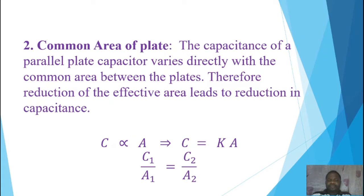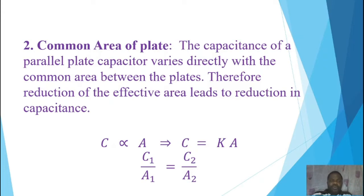Second factor: the common area of the plates. The capacitance of a parallel plate capacitor varies directly with the common area between the plates. Reducing the effective area leads to reduction in capacitance. When tuning a radio set, you are varying both the distance between the plates and the common area. Mathematically, C is directly proportional to A, so C = KA, which means C₁/A₁ = C₂/A₂.